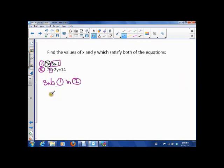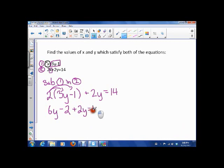So what I'm going to do is I'm going to substitute 1 in 2. So instead of 2x, I'm going to write 2 times 3y minus 1 plus 2y is equal to 14. So now I have to expand the brackets. So 2 times 3y is 6y, 2 times 1 is 2, plus 2y is 14.